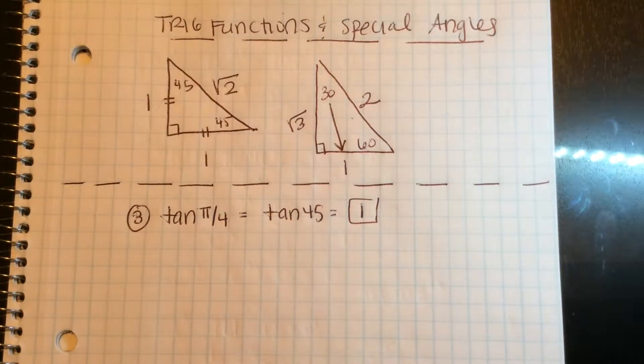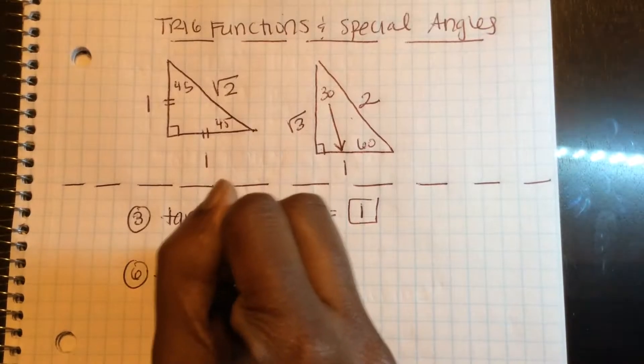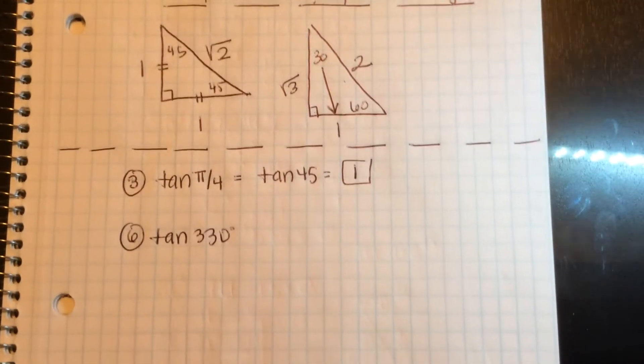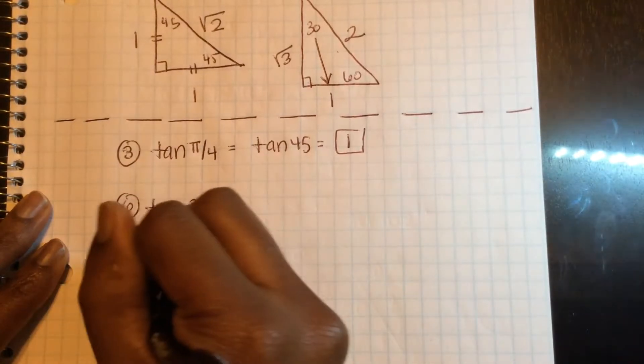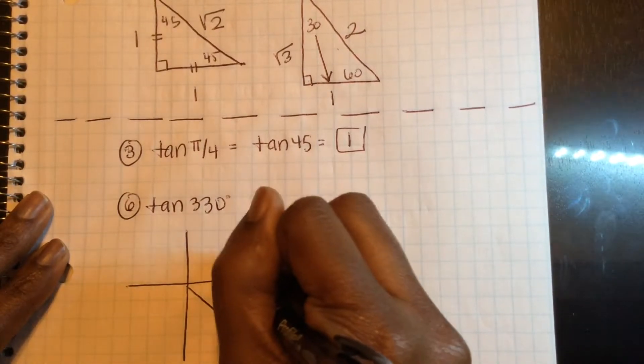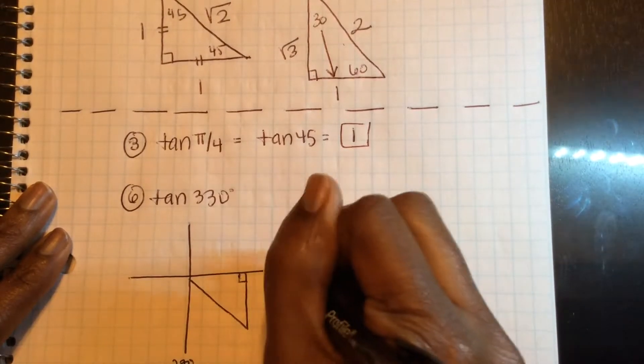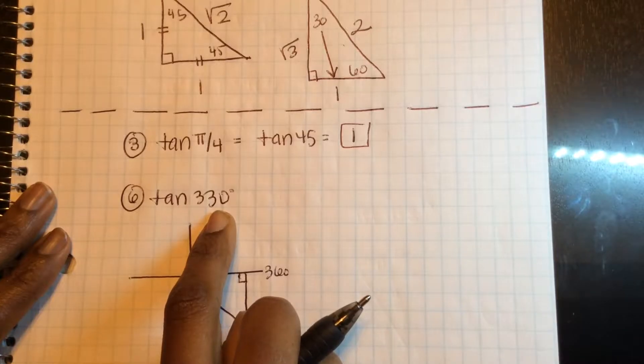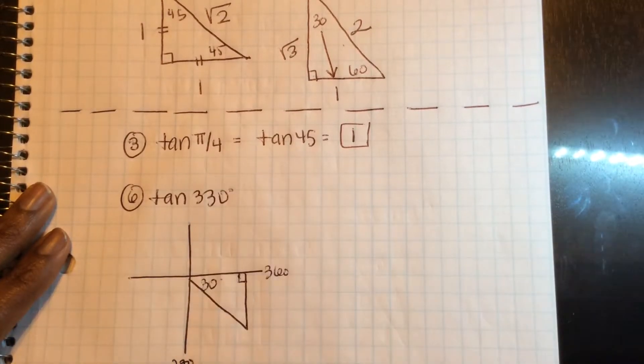Another one they have is number 6, tangent of 330 degrees. Now with 330, we have to think about which quadrant it's in. 330 is going to be here somewhere between 270 and 360. If I think about what's my reference angle for this 330 degrees, it's going to be 30.